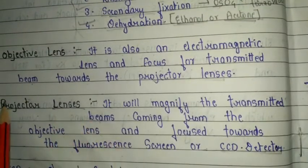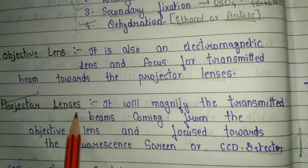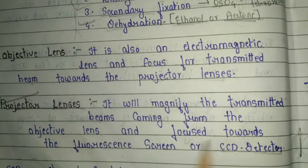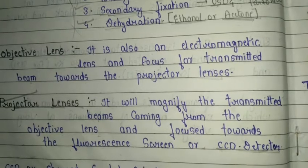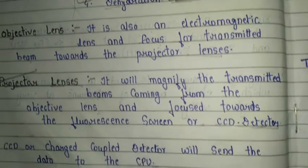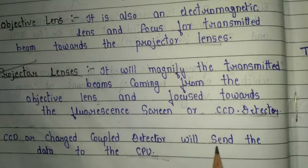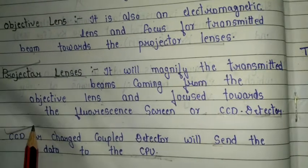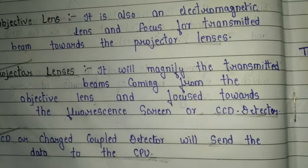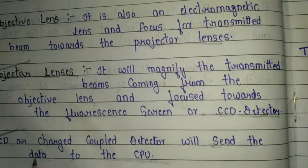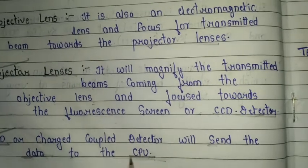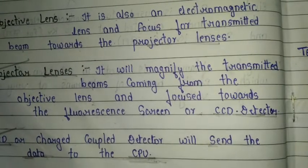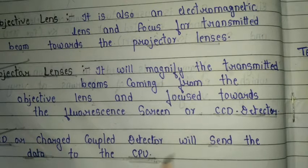The projector lens magnifies the transmitted beam coming from the objective lens and focuses it toward the fluorescence screen. The CCD (charge-coupled device) detector sends data to the CPU. This is the final stage where we get our image — the data is sent from the CCD detector to the CPU for display.